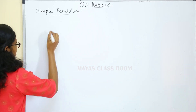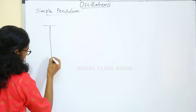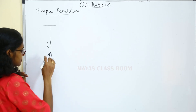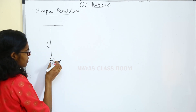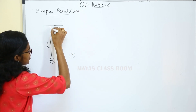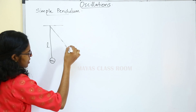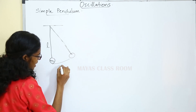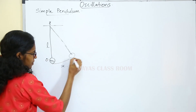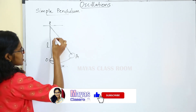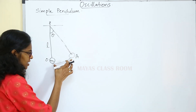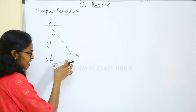We have a figure showing a string attached to a bob of mass m. The string has a length L. When the bob is displaced from its mean position, we can see the angle theta at that position. The displacement is represented by the arc length OA, which represents the displacement x.